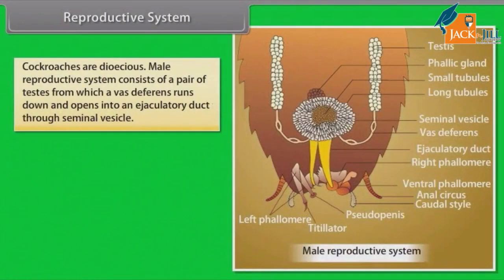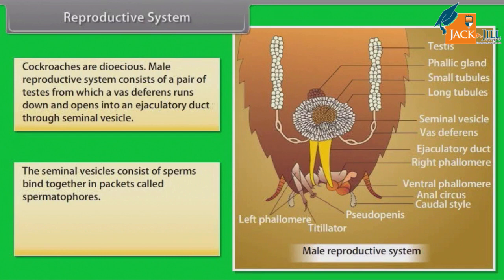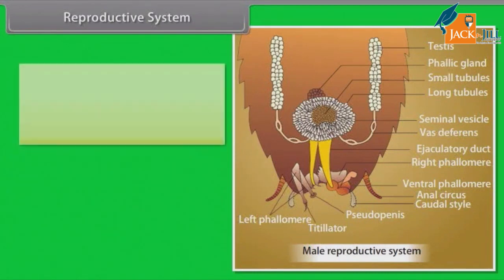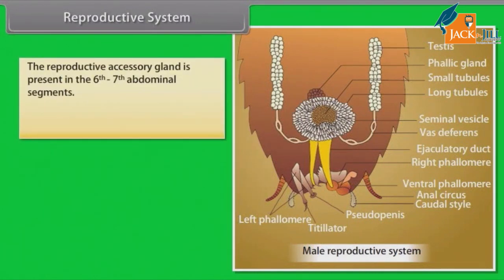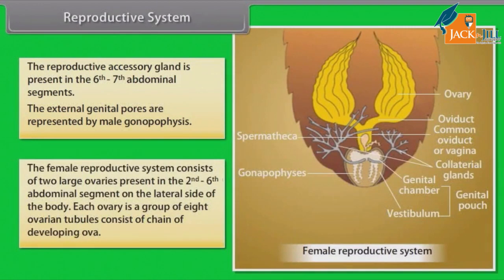Reproductive System: Cockroaches are dioecious. The male reproductive system consists of a pair of testes from which a vas deferens runs down and opens into an ejaculatory duct through the seminal vesicle. The seminal vesicles consist of sperms bound together in packets called spermatophores. The ejaculatory duct opens into the male gonopore present on the ventral side of the anus. The reproductive accessory gland is present in the sixth and seventh abdominal segments.